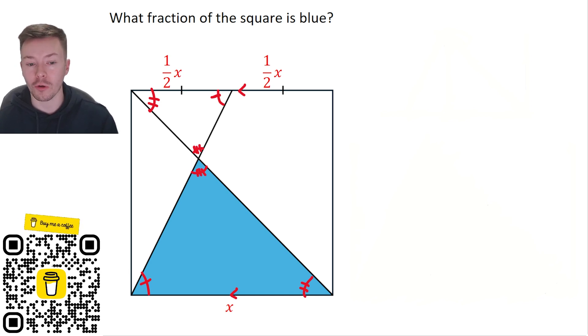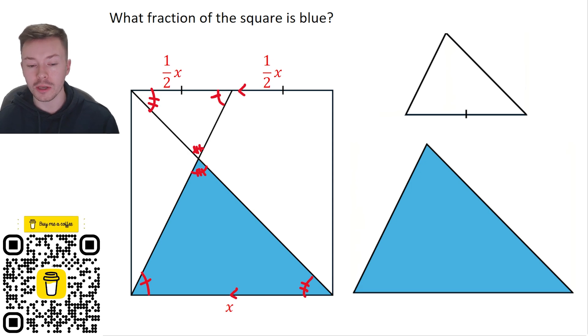Now what that means, because we've got three angles that are equal, is that we've got similar triangles. And so what it would help us to think about now is to put these triangles out separately like this, and so we can then start comparing scale factors. Well, we know that the base of the smaller one is a half x and the larger one is x.